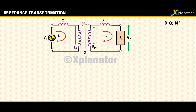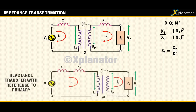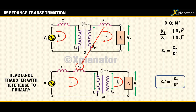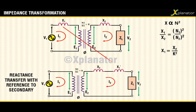Taking a ratio of primary to secondary and simplifying, you will get x1 equal to x2 divided by k². If reactance is transferred with reference to primary, then the new reactance is called x2 dash, its value being given as x2 divided by k². If reactance is transferred with reference to secondary, then you add x1 dash in the circuit and its value is given as k² times x1.